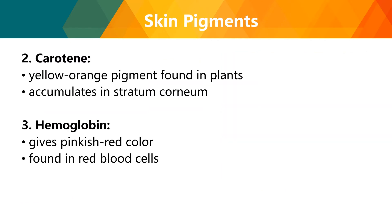Other skin pigments include carotene, a yellow to orange pigment found in plants that accumulates in the stratum corneum. When a person appears yellow-orange, this can indicate a health problem — it can be a sign of hepatitis. You also have hemoglobin, which gives the pinkish-red color found in red blood cells. These skin pigments are important indicators of health status.